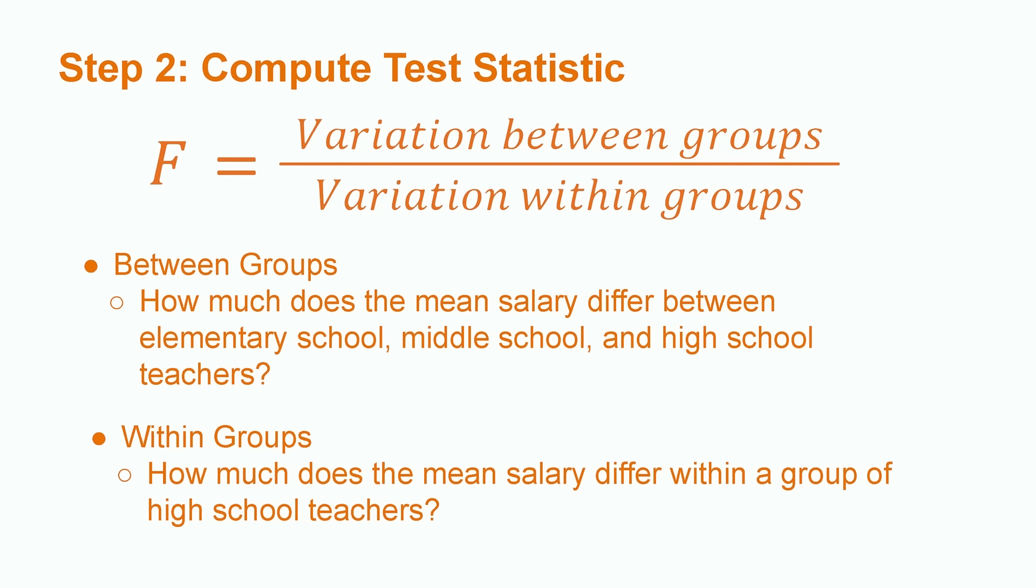Variation within groups refers to how different means are across all members of each individual group. In our example, within groups, we refer to the amounts of variation within each group individually. For example, high school teachers.